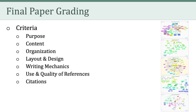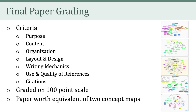Those seven areas are: Purpose, Content, Organization, Layout and Design, Writing Mechanics, Use and Quality of References, and Citations. Please see the final paper rubric in Canvas for more details about each of these areas. Your grades on the final paper will be based on 100 points; however, the actual weight of your paper is the equivalent of two concept maps. Just reach out to me if you have any questions about this or any other aspect of the final paper.